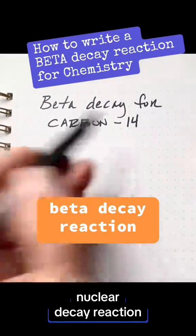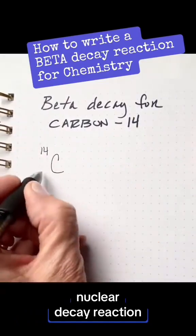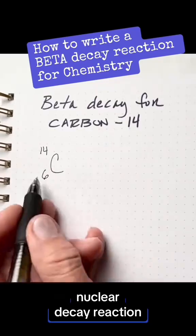Let's write a beta decay reaction for carbon-14. So 14 is the mass number, we're going to look on the periodic table, the atomic number for carbon is 6.